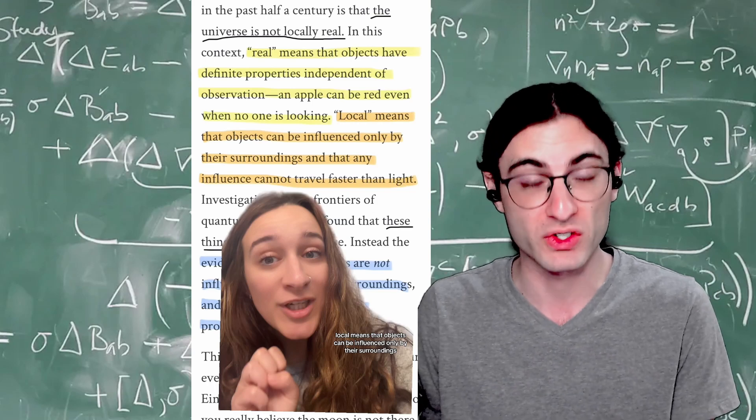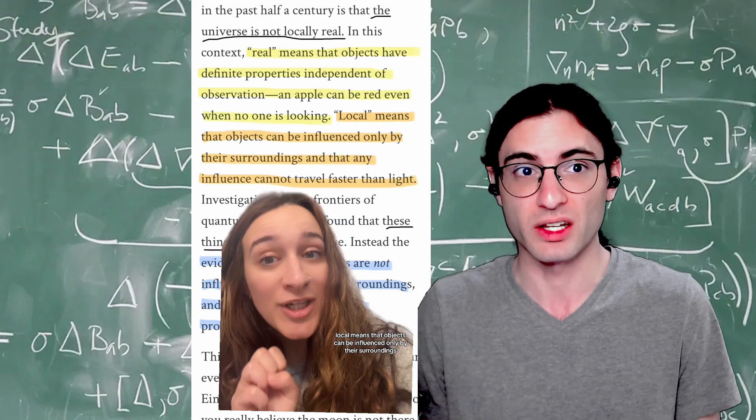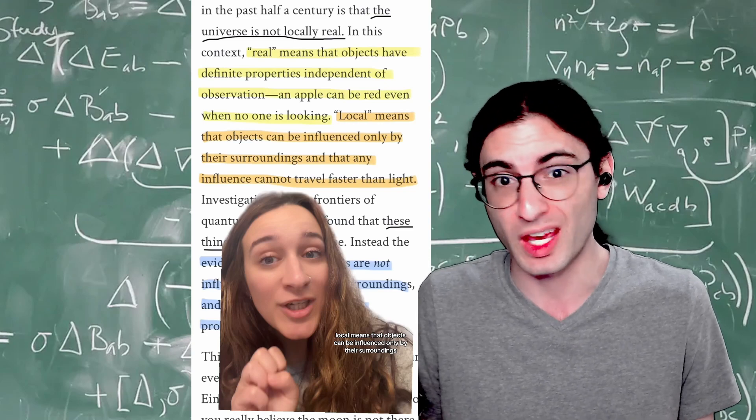But the issue is that we shouldn't be using the word observation. We should be using the word measurement because observation implies an observer, a person. It implies that there's some sort of human cause, but there really isn't, at least as far as we can tell. You can measure things with a camera just as well.